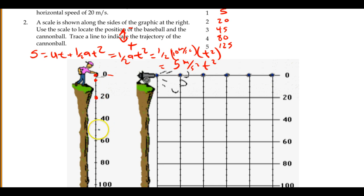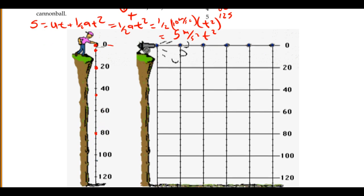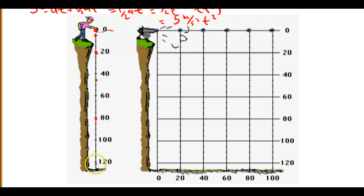2 seconds, it will be at 20. 3 seconds, it will be at 45. 4 seconds, it will be at 80. And finally, at 5 seconds, it will be at 125. Now, if you look at that as a motion diagram, the velocities are increasing. It's covering more distance as it falls. We have a downward acceleration, which is what we should expect.